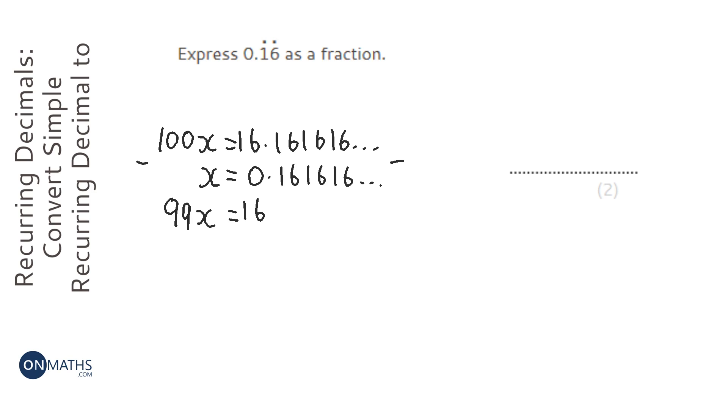So we're left with 99x equals 16. Let's put our lines going down. Divide both sides by 99. And we get x equals 16 over 99.